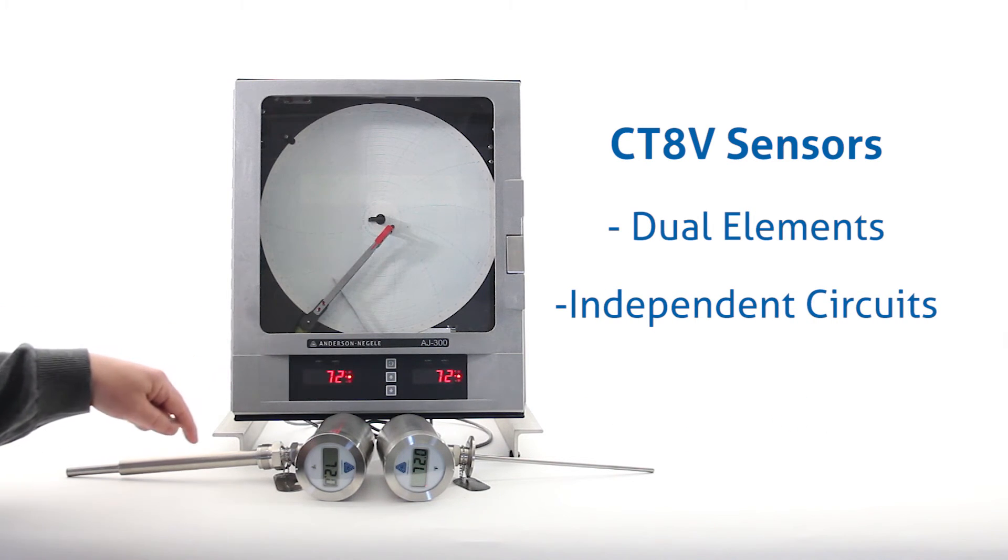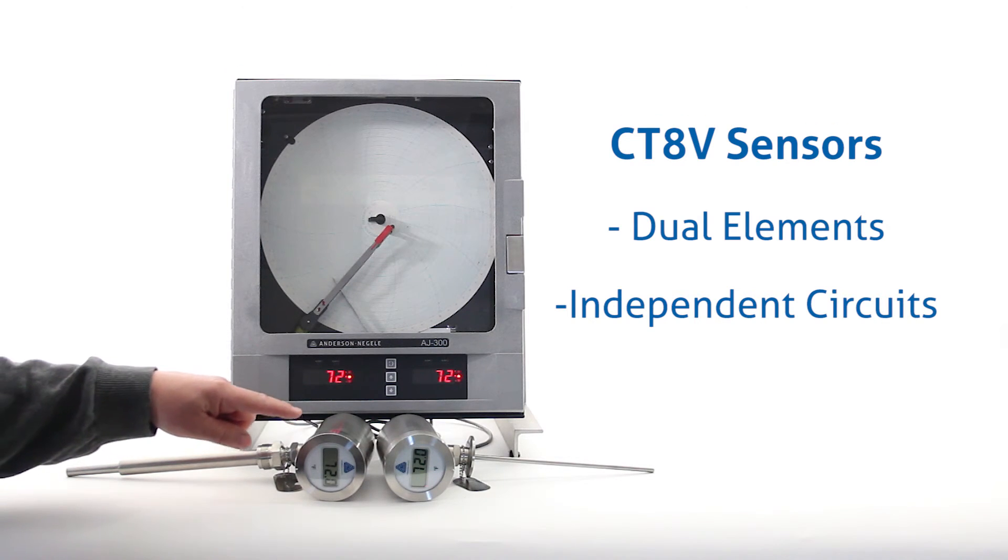The sensors are made with special dual elements inside the stem which are totally independent circuits. This allows the displays on the sensor heads to be used as a comparison to the readings on the recorder.